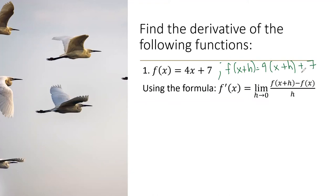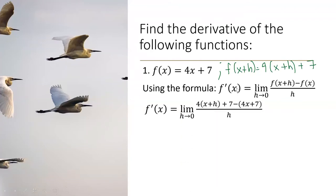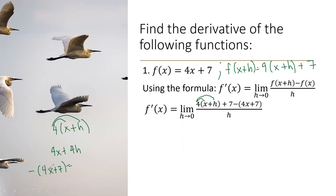What we're going to do is substitute f of x plus h and f of x with their respective functions. So ang f of x plus h natin ay 4 times x plus h plus 7, then our f of x is 4x plus 7. What we're going to do next is perform the multiplication through the distributive method. Since 4 is the common factor, we multiply with every term: 4 times x will be 4x, then 4 times h will be 4h.